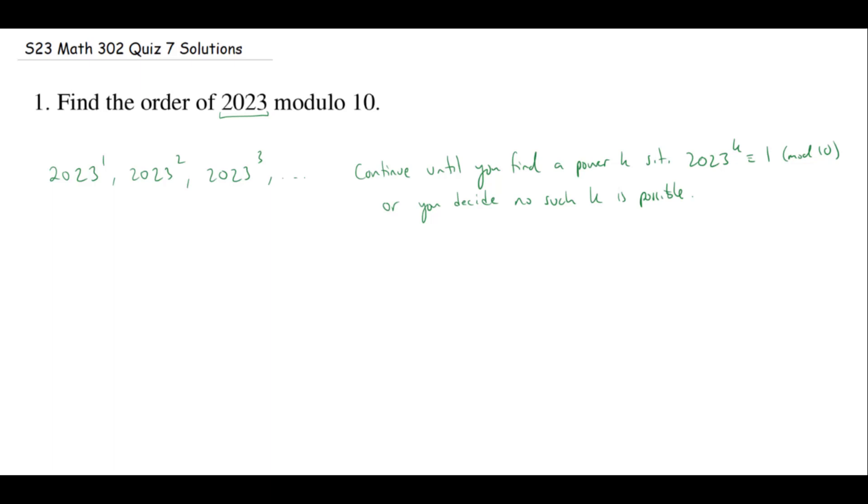It would be really annoying to start computing powers of 2023 and then at the end reduce modulo 10. But we don't have to because Gauss told us we can always reduce first when we're doing addition and multiplication. Reduce, then do your operations, then reduce again. You just reduce all the time. So what I want to do is reduce 2023 modulo 10 before I start taking powers. Reducing modulo 10 is really great. You just take the last digit, which in this case is a three.